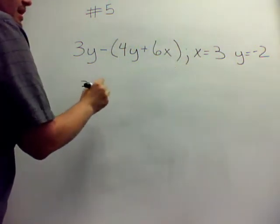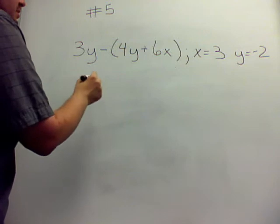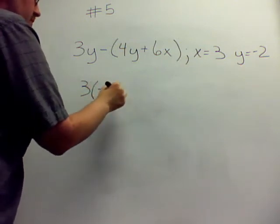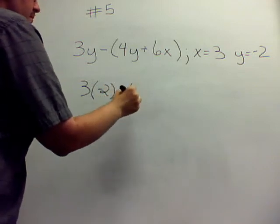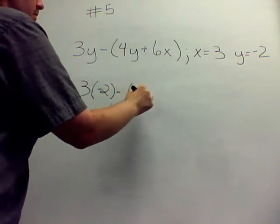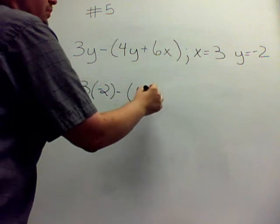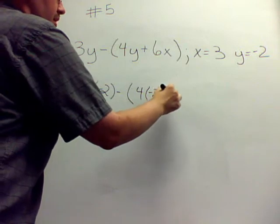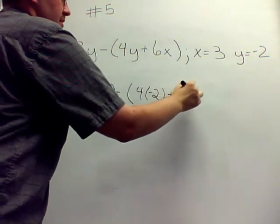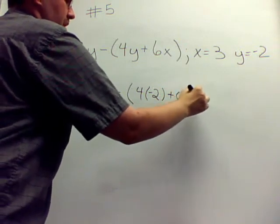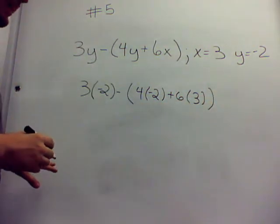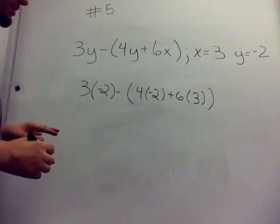I'm going to rewrite this, just plugging in those numbers. 3y, so minus the quantity 4 times y, which is negative 2, plus 6 times x, which is 3. Now, please excuse my dear Aunt Sally. Parentheses, exponents, multiplication, division, addition, subtraction.